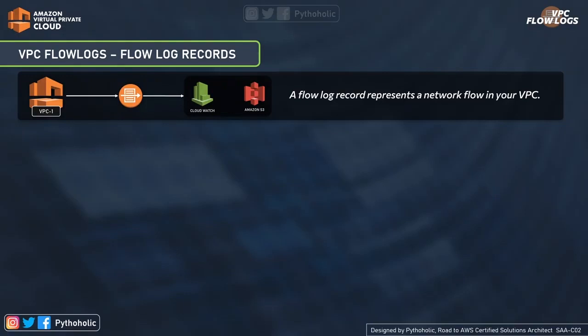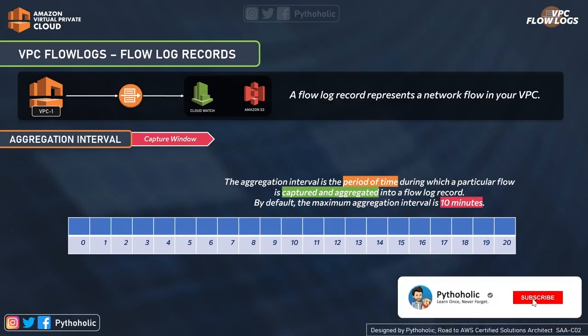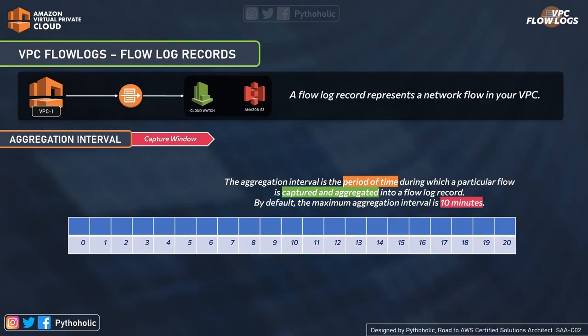The time interval in which the traffic flow occurs is called a capture window, or more precisely an aggregate interval. Remember the meaning of aggregate carefully — it is an entity formed by a combination or collection of things. If you combine interval with aggregate, it means it's a combination of time intervals. The aggregation interval is the period of time during which a particular flow is captured and aggregated into a flow log record. By default, the maximum aggregation interval is 10 minutes.